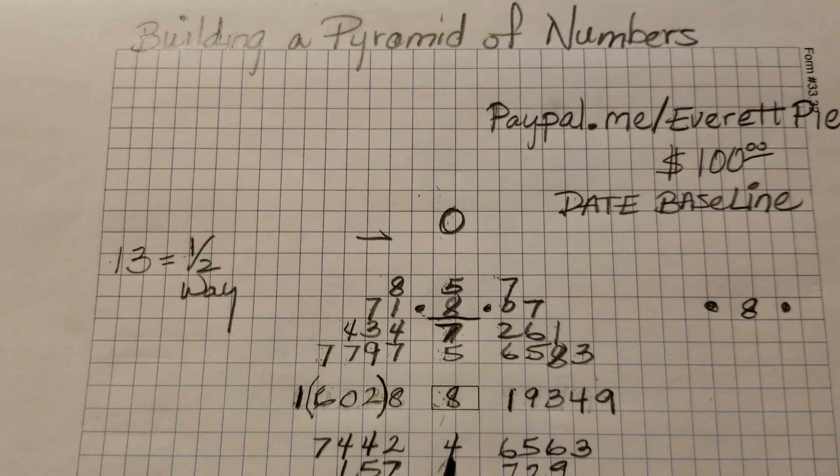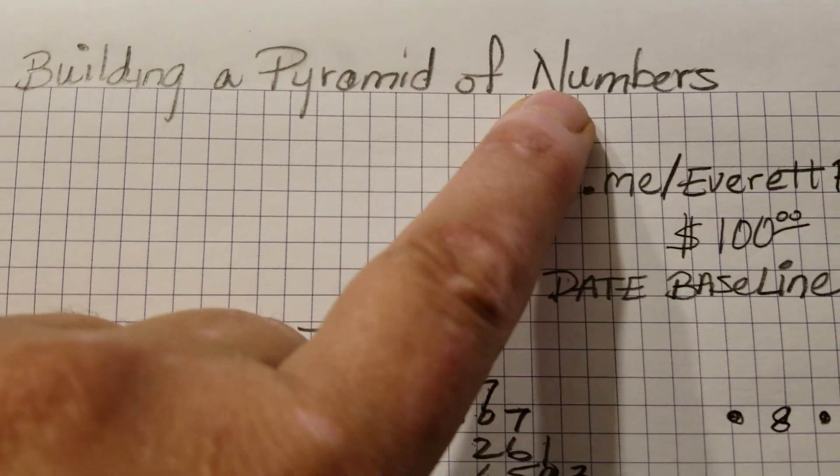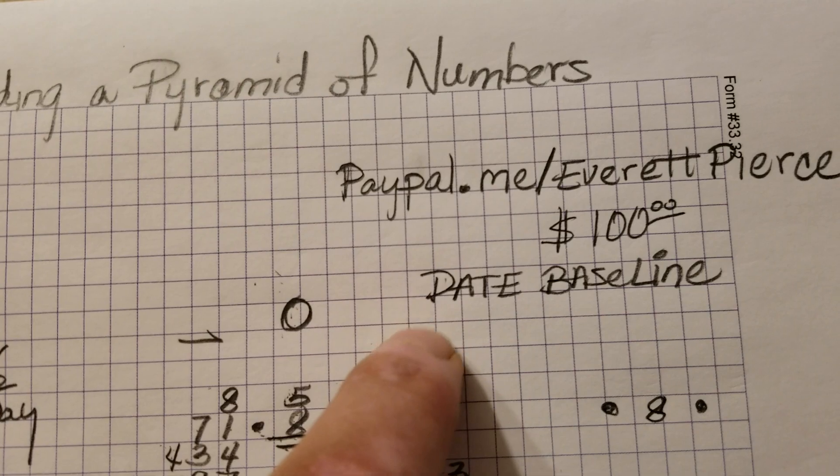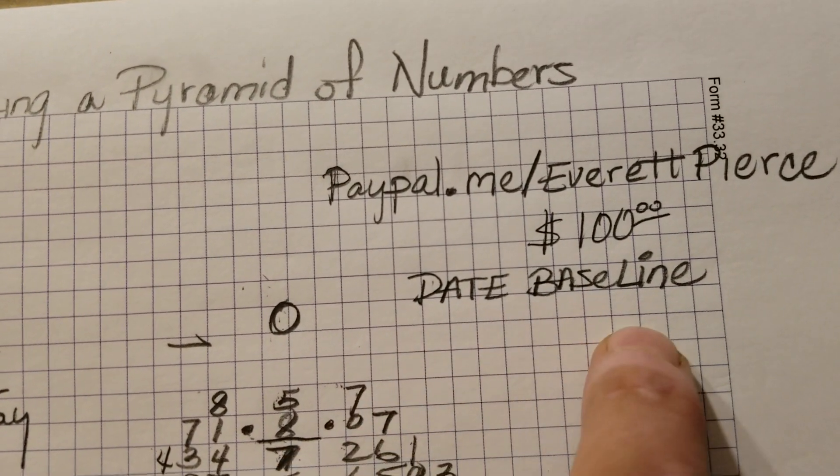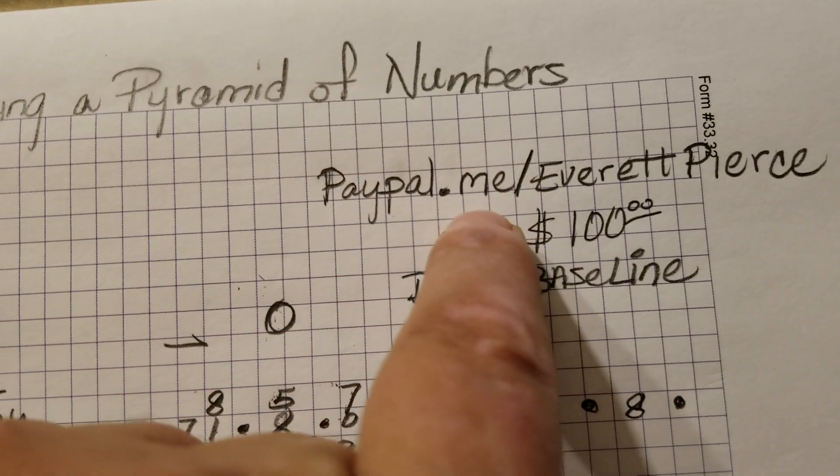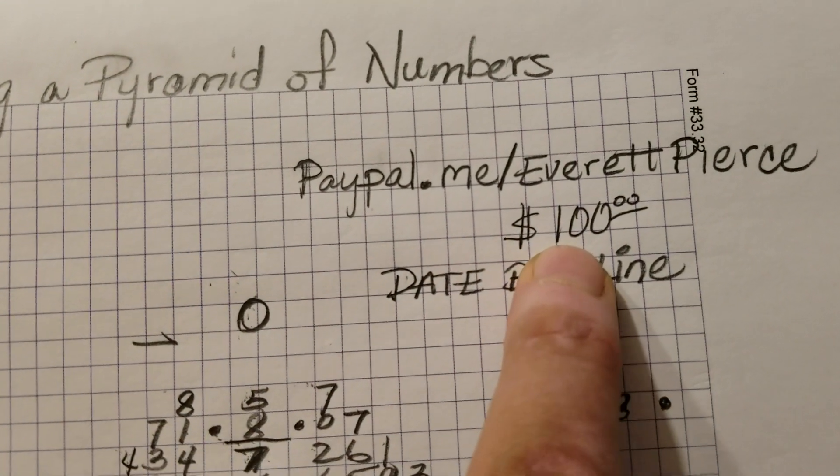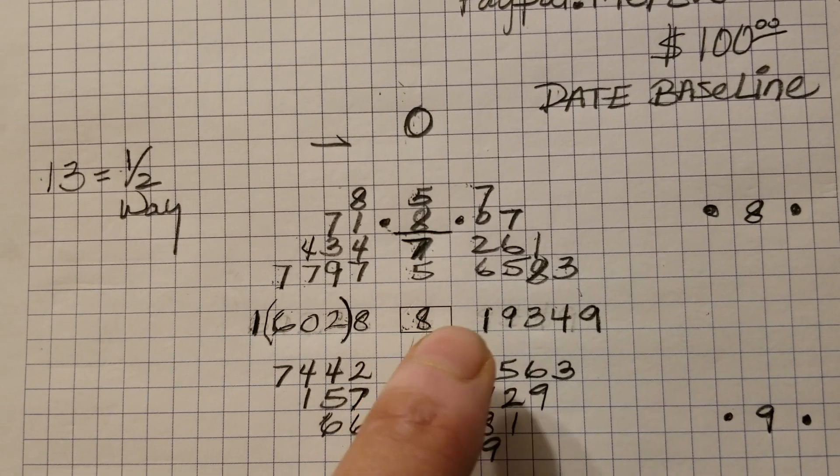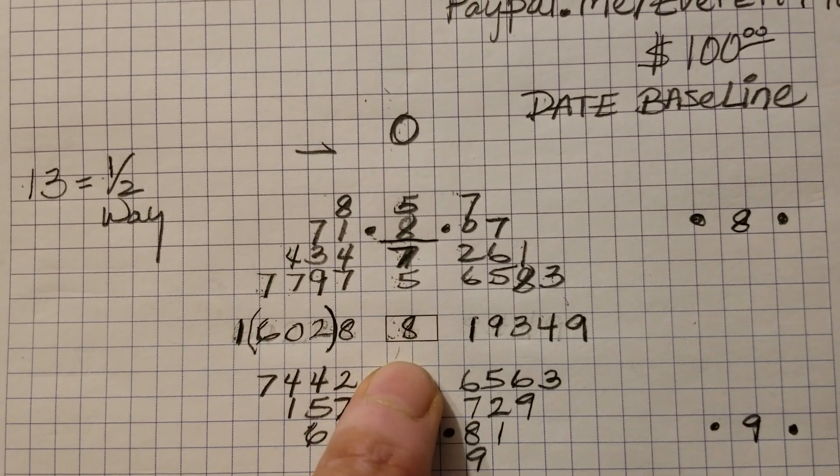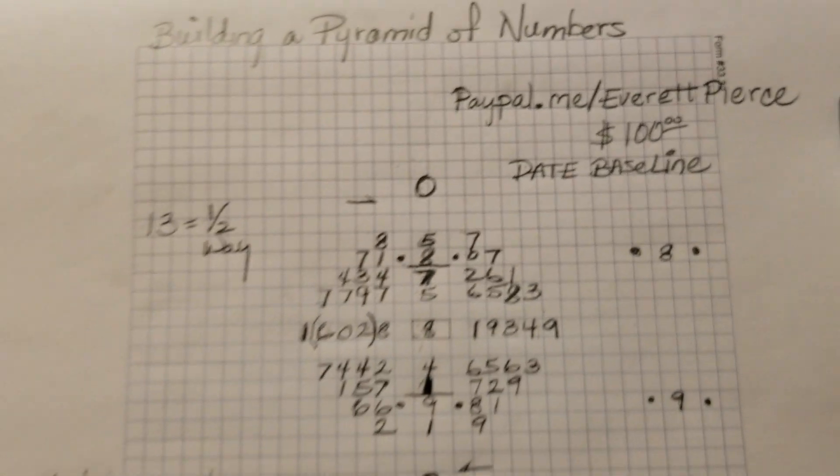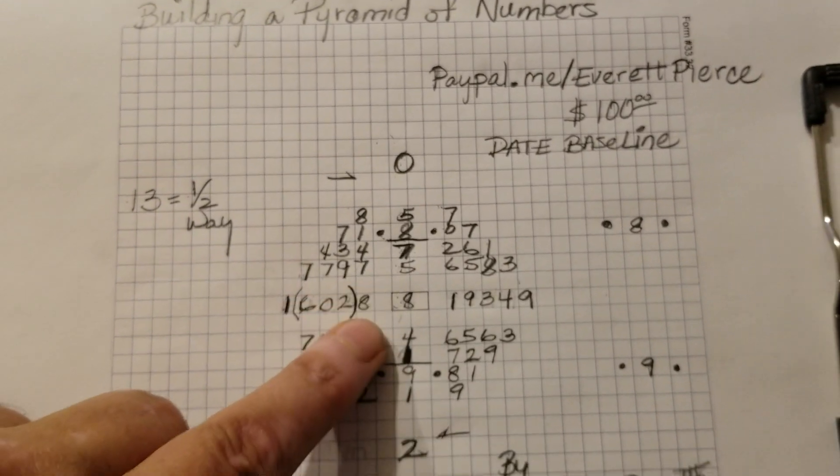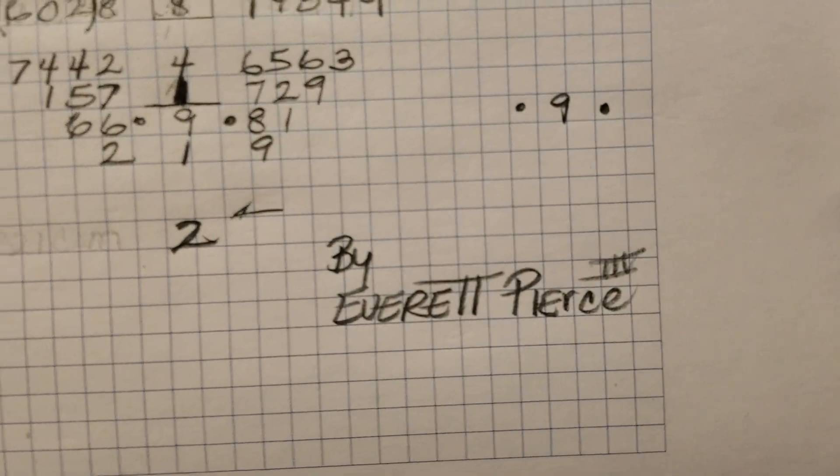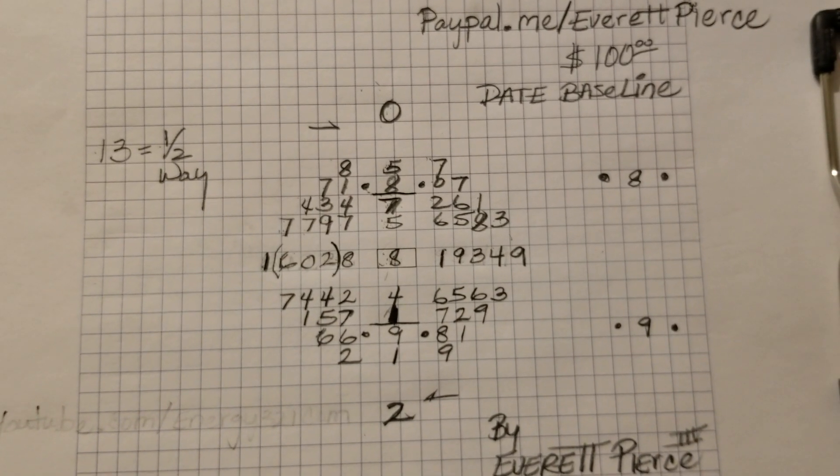So, once again, we'll end it right here. This is building a pyramid of numbers. I do have video that teaches you how I set up my baseline using the date. Using the date. Go to paypal.me forward slash Everett Pierce. Send me $100. You can text me when you do that. Text me, let me know you sent the payment and I'll send you the links to my video. Well worth $100. It's worth over $100. So, with that, we'll end it right there. That should get you going on learning how to build a pyramid of numbers. This is Everett Pierce and with that, be blessed.